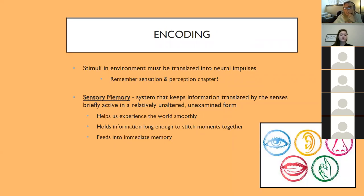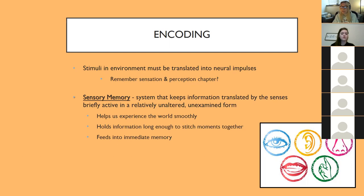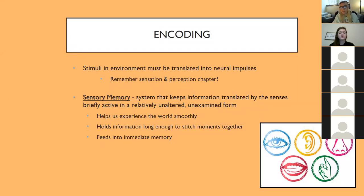When we encode information — as you remember from the sensation and perception chapter — we take all the stimuli in our environment and translate that into something our brains can actually understand; it has to be transduced into neural impulses. Every different kind of stimuli, whether light or sound, had to be changed into a type of information your brain could understand. Once it's translated into those neural impulses, it can be encoded and stored by your brain. So first we're going to talk about sensory memory, which is very brief — the system that keeps information translated by your senses very briefly active in a relatively unaltered, unexamined, unchanged form.